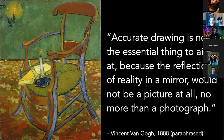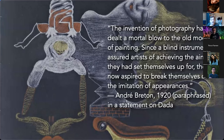Van Gogh, in his pivotal year of 1888, wrote to his brother: 'Accurate drawing is not the essential thing to aim at, because the reflection of reality in the mirror would not be a picture at all, no more than just a photograph.' We see this trend away from realism — away from realist colors — and essentially the entire modern art movement. I think it's actually plausible to say that we would not have had modern art if it weren't for photography causing artists to rethink what it is to be an artist. The Dadaists said that the invention of photography 'dealt a mortal blow to the old modes of painting' and that artists 'now aspire to break free of the imitation of appearances.' Modern art is, at least in part, an effect of the invention of photography.